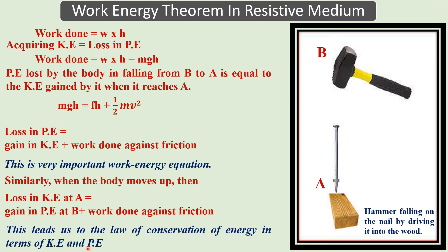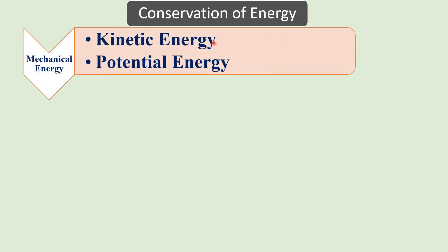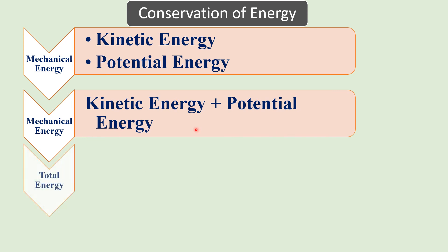This leads us to the law of conservation of energy. Kinetic energy and potential energy can be converted into each other, and although we cannot ignore frictional forces in reality, the total energy of the system remains the same. Mechanical energy is the sum of kinetic energy and potential energy.